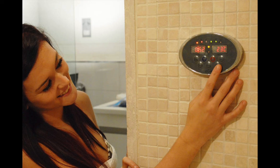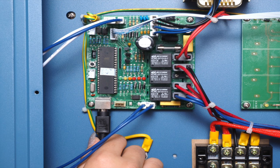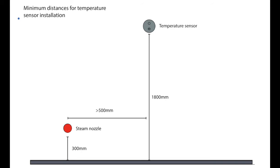The keypad can be installed inside or outside of the room. The connection lead is 5 metres long and plugs into the circuit board as shown in the image. The temperature sensor plugs into the keypad and has a 4 metre lead. This should be positioned at 1800 millimetres from the floor and as far from the steam nozzle as possible.